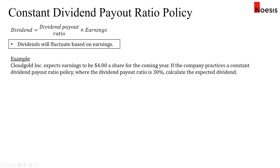For the constant dividend payout ratio policy, management will apply a dividend payout ratio on the current year's earnings to get the dividend amount. If the dividend payout ratio is constant — say 30% — then the dividend will fluctuate based on the fluctuation in earnings. The higher the earnings, the higher the dividend level; the lower the earnings, the lower the dividend level.